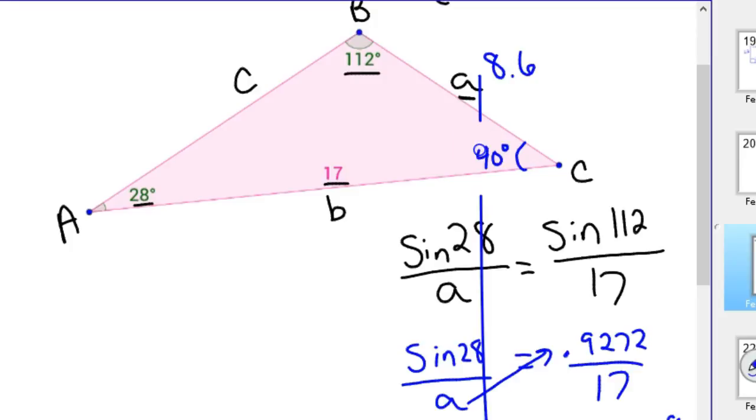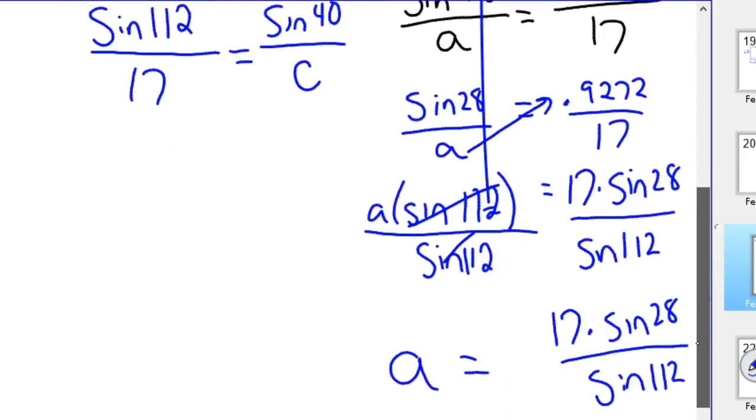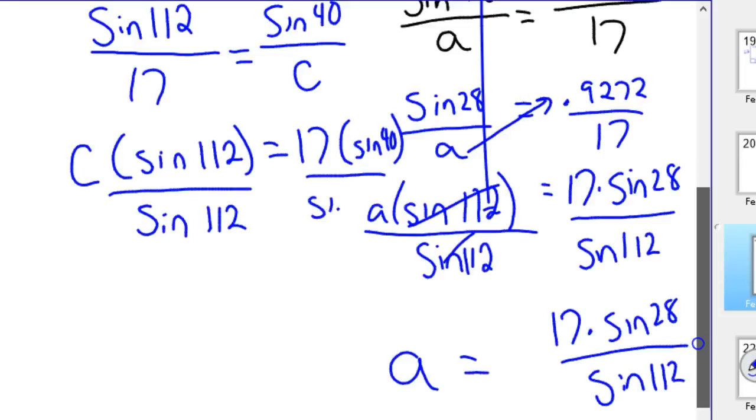And now you can do the same thing. So we have sine of 112 given to us, that angle, sine of B over b. So sine of 112 over 17 is the same as sine of 40 over C. And then you cross-multiply, just like we did on the last one. So C times sine of 112 is the same as 17 times sine of 40. Then you would divide by sine of 112.